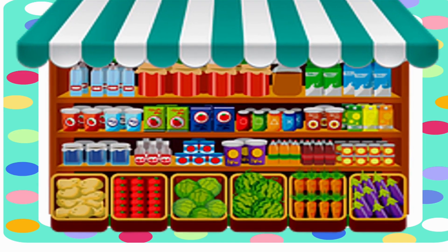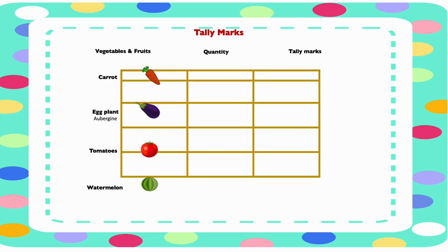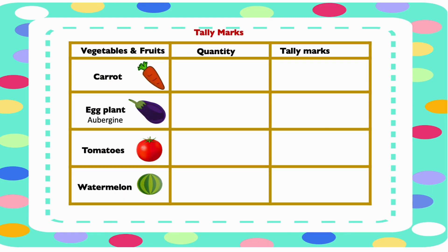Now let's do some examples on tally marks. Mr. Jones and family went shopping. They bought some fruits and vegetables. We're going to look at the fruits and vegetables and represent them with tally marks. They bought some carrots, eggplants, tomatoes, and watermelon.